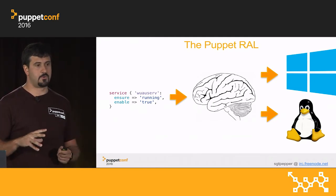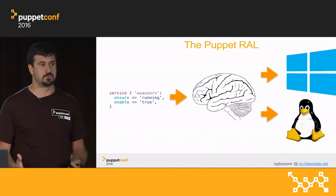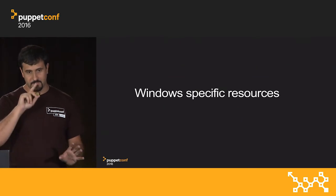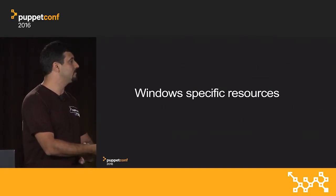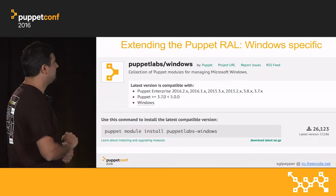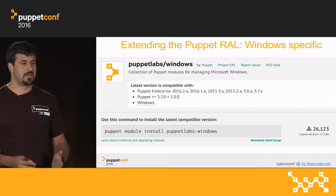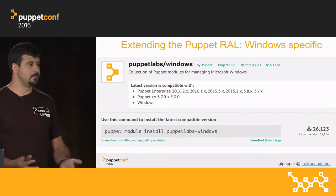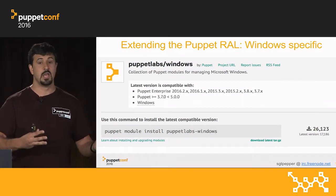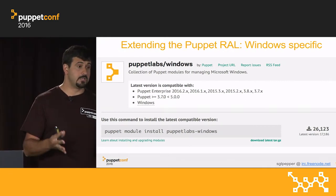Different platforms are 90% alike when we talk about generic terms like a file or a service, but they each have their different intricacies. Windows is quirky. We have a number of modules that extend the Resource Abstraction Layer to manage things that are Windows specific. For example, there is no other platform that has the concept of a registry, and no other platform that manages ACLs like Windows. So you can use the base set of types — the file, the service, scheduled tasks, and so on.